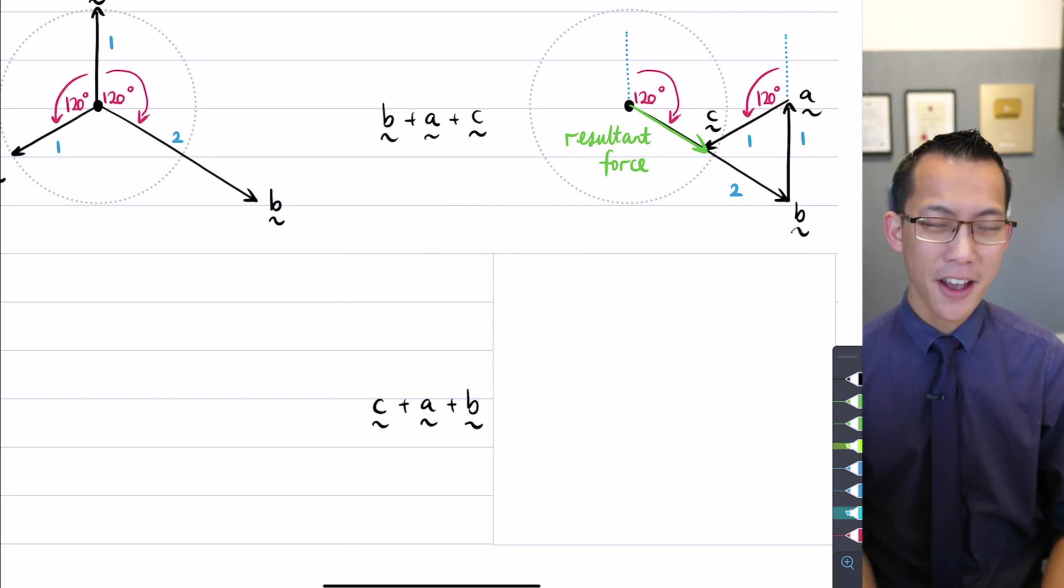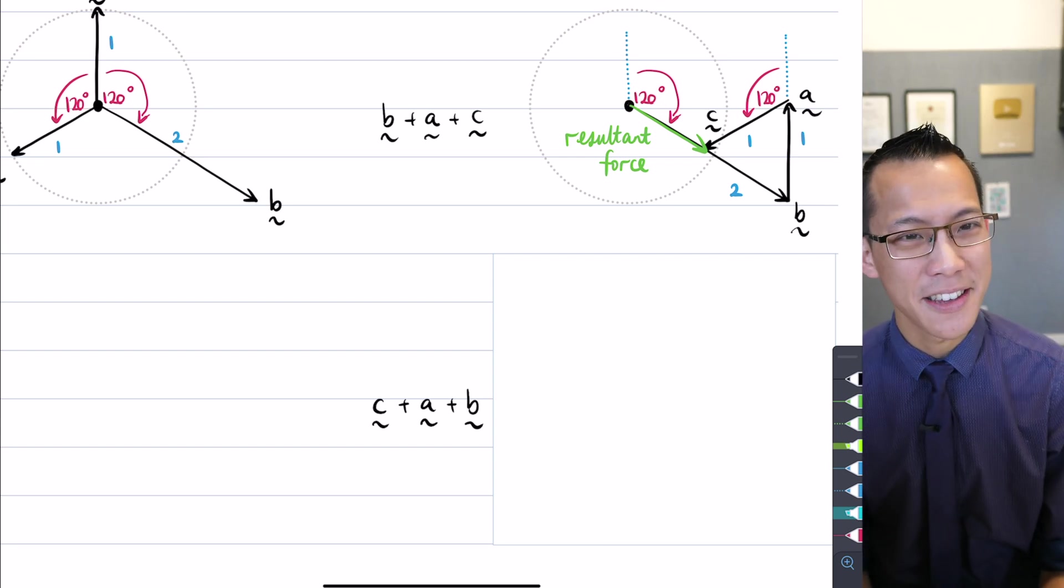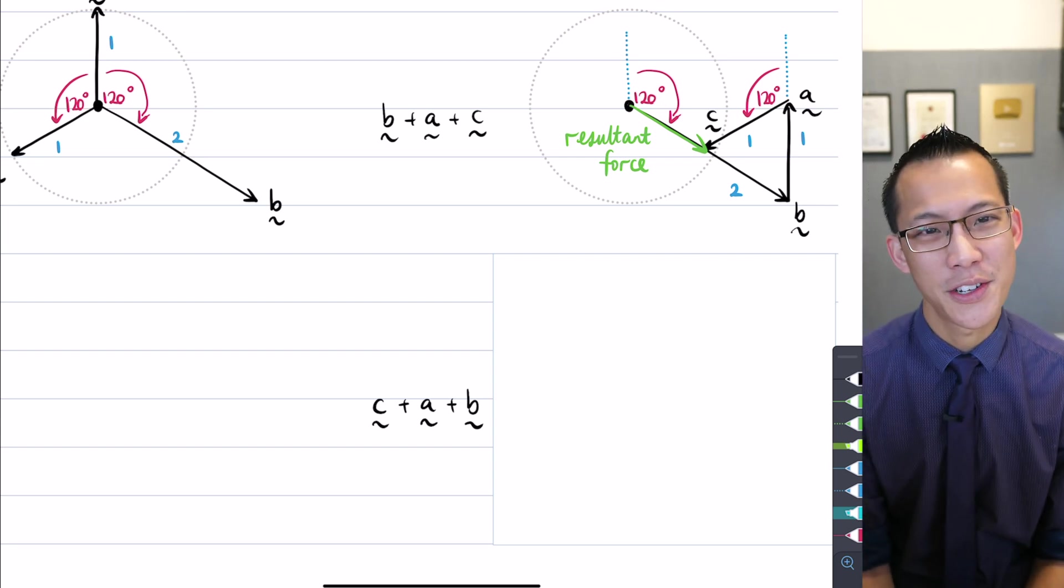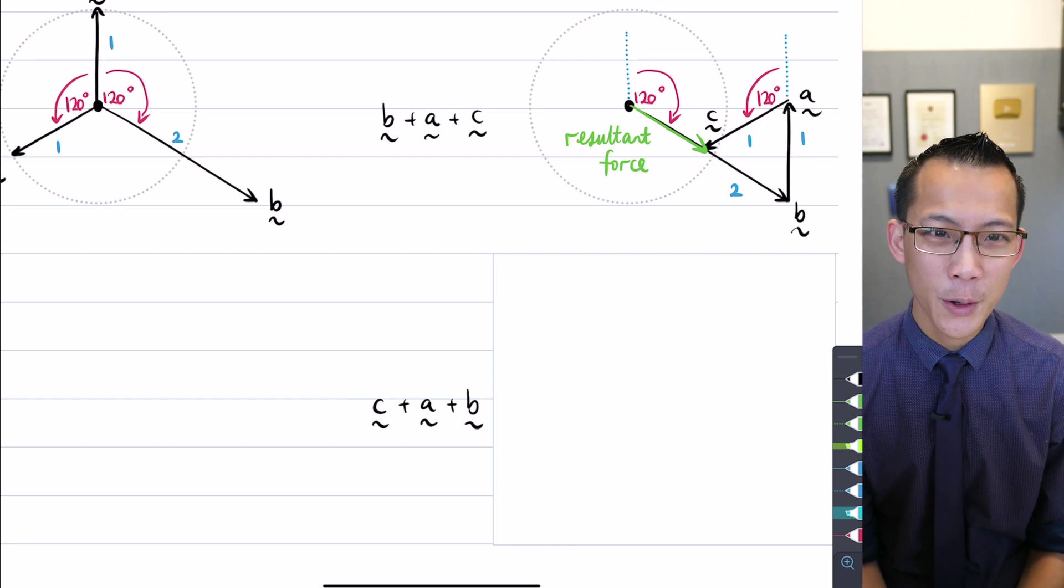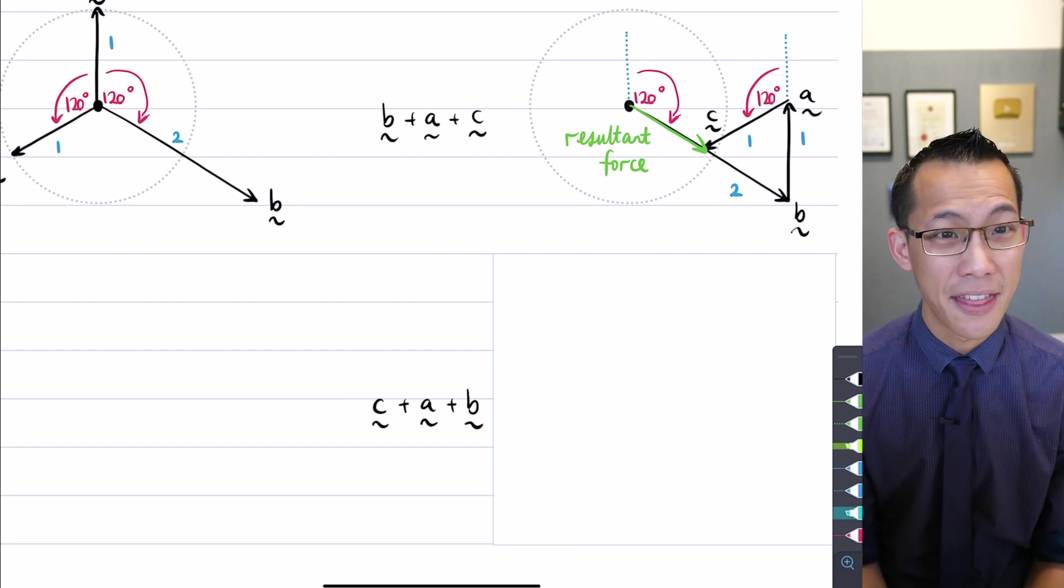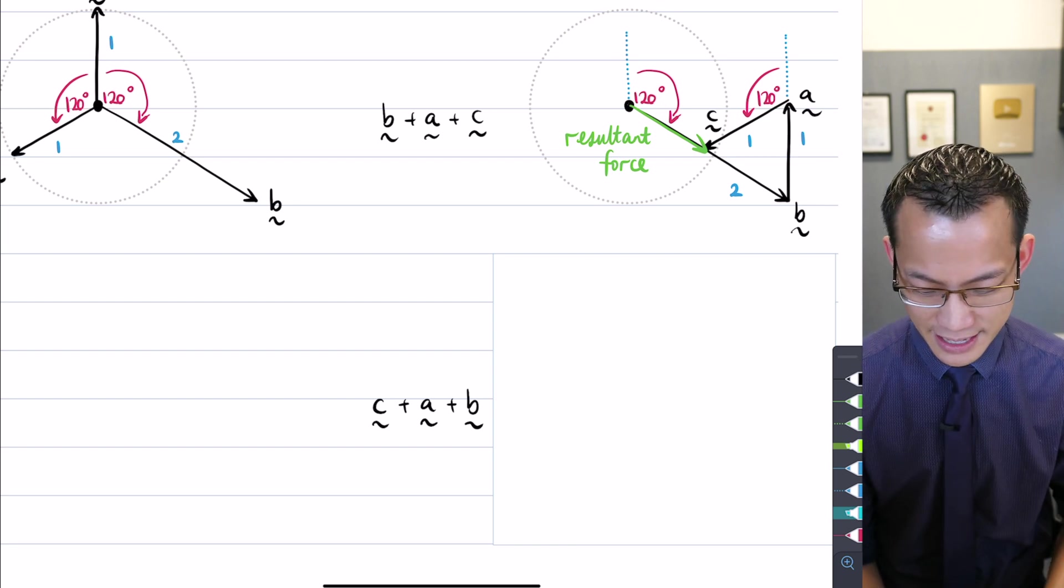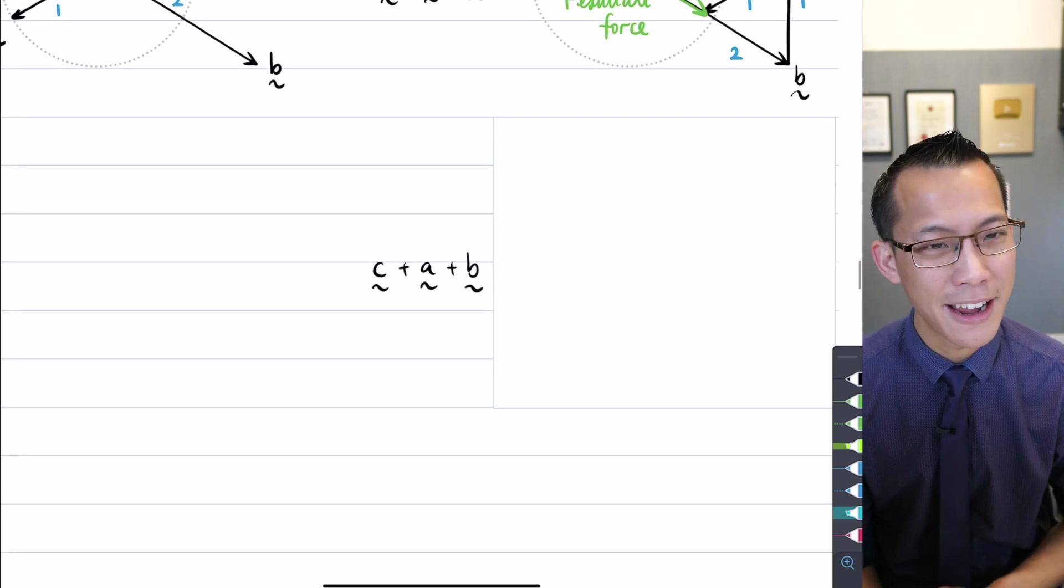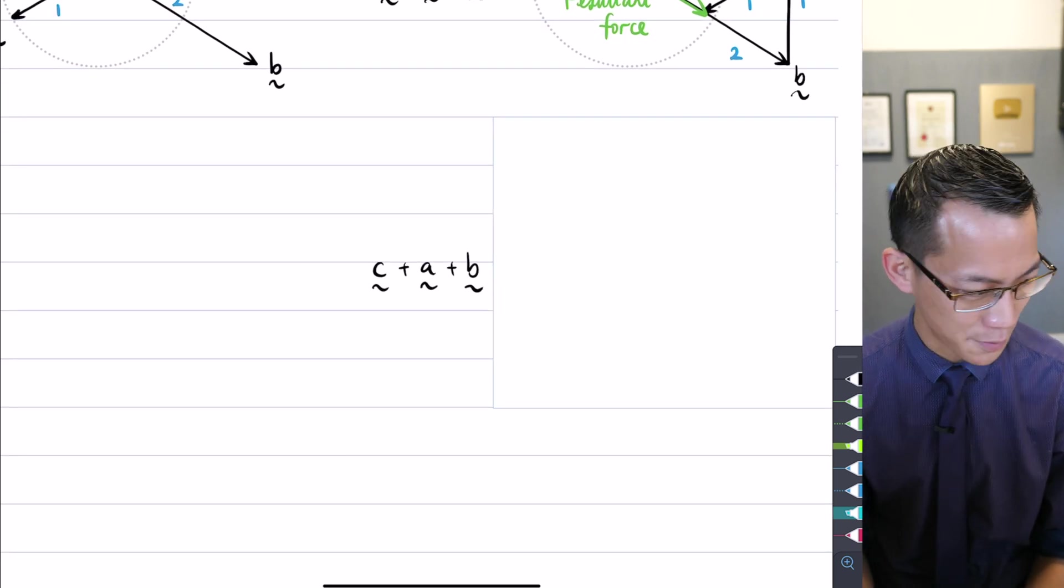All right, last one, just for the sake of it. We've been doing c last in both of those instances. What happens if we do c first? Go ahead, draw where you will head if you go to c and then do a and b, and let's see if your diagram can show where you should end up. I'll give you a minute just to do that.